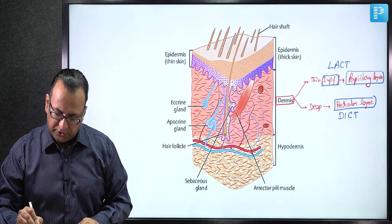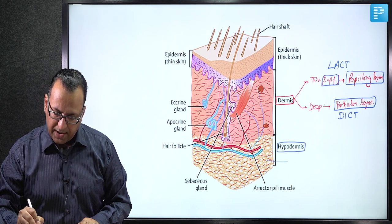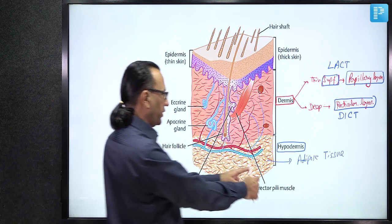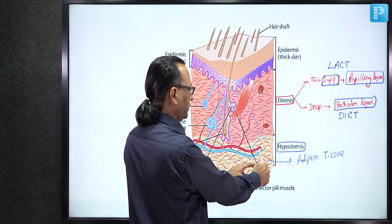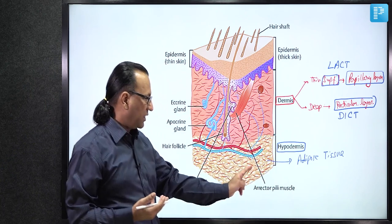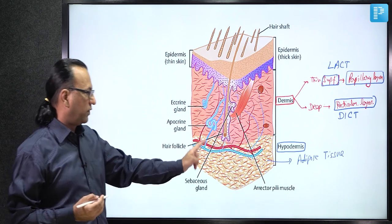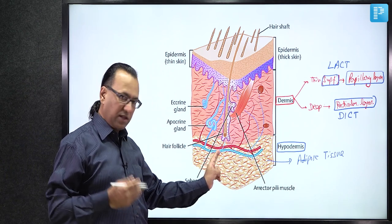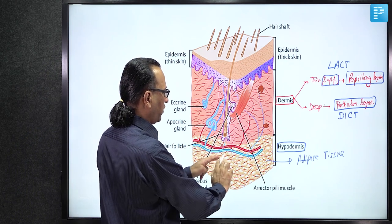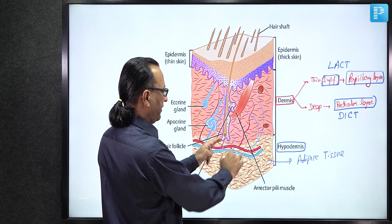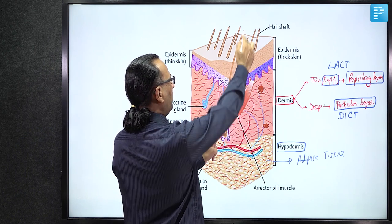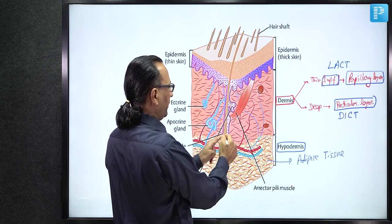Still deeper is the hypodermis, which contains adipose tissue and a neurovascular bundle — artery, vein, and nerves. The neurovascular bundle moves toward the root of the hair follicle, which is in the dermis, and the follicle extends toward the epidermis and opens onto the skin surface.